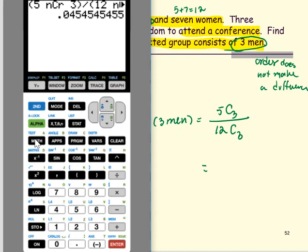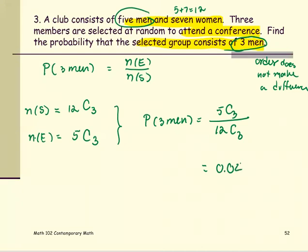The answer is 0.04545, and so forth. So it means it's about 4.5% chance to get all three men from the group of 12 people to attend a conference.